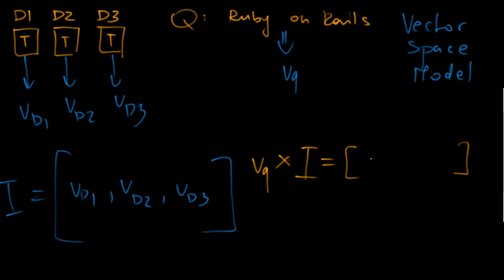Each element in this vector shows how many words your query matched in each of these documents. So for instance, it could be something like this: two means that Ruby on Rails query matched two words in document one, zero means that our query matched zero words in document two, and one means that it matched one word in document three.